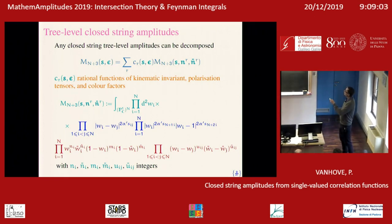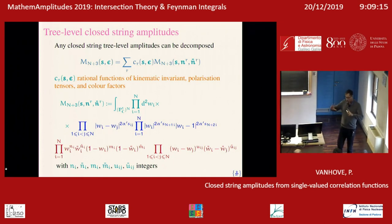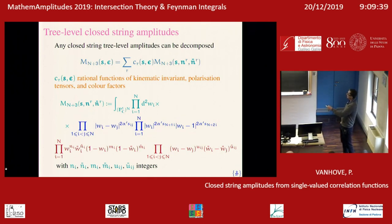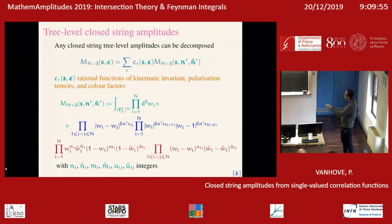Any closed-string amplitude at tree-level can be expanded as a finite linear combination of what I call building blocks. A closed-string amplitude at genus zero is essentially a sphere with n punctures, where you fix three punctures to be 0, 1, and infinity, and integrate over the remaining n. The integrand involves the kinematic invariants, with alpha prime being the small expansion parameter. Depending on whether you do a bosonic string, type IIa, type IIb superstring, or heterotic string, you always have the same integral structure; you only tune the rational coefficients in terms of the kinematic variables.